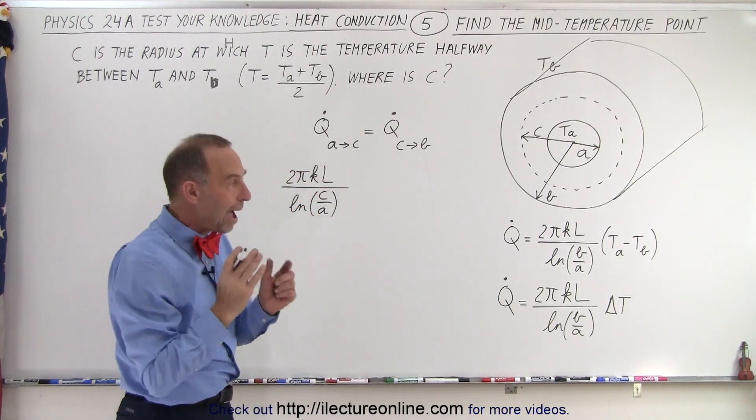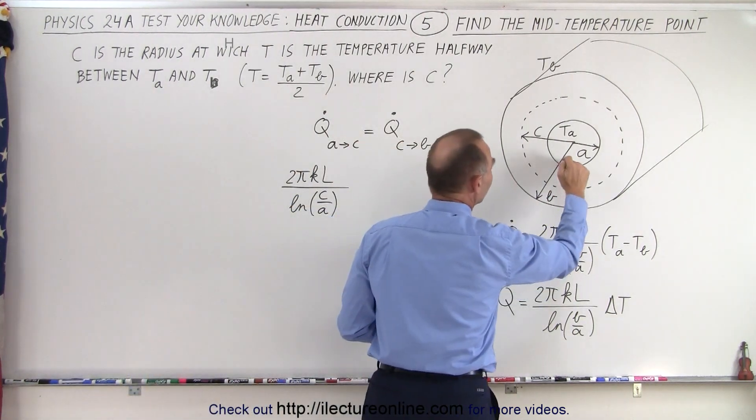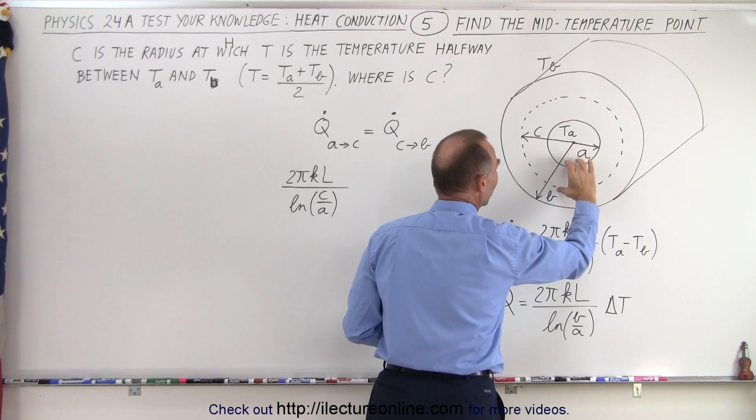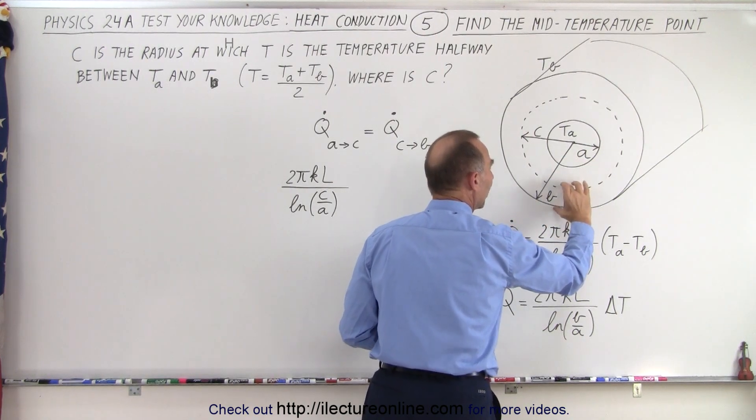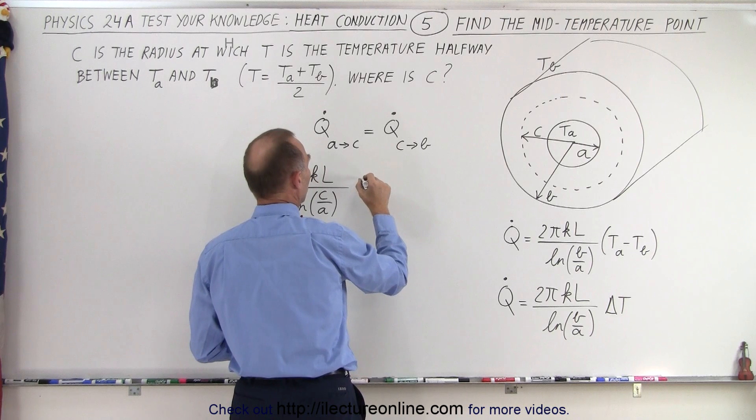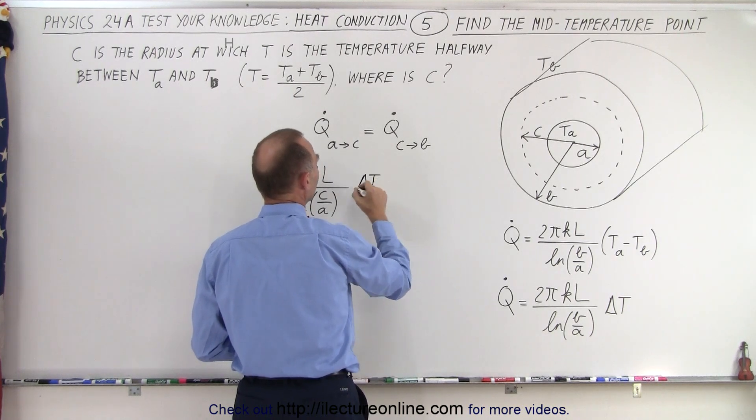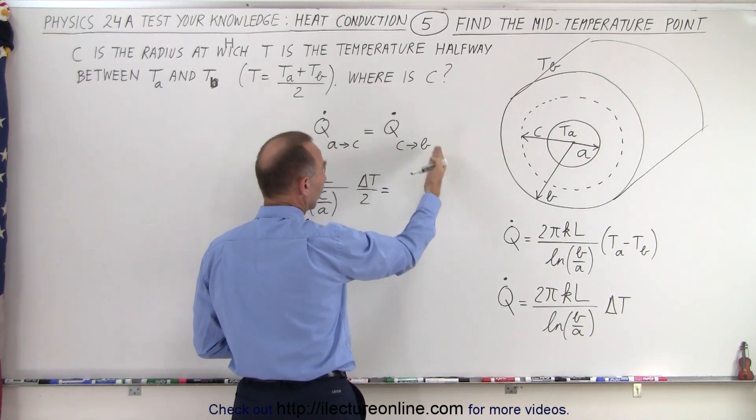Now the delta T is going to be half the delta T, because going from here to here should be half the change in the temperature, and going from here to here should be the other half the change in the temperature. So we write this as delta T divided by 2, and that must equal the right side.